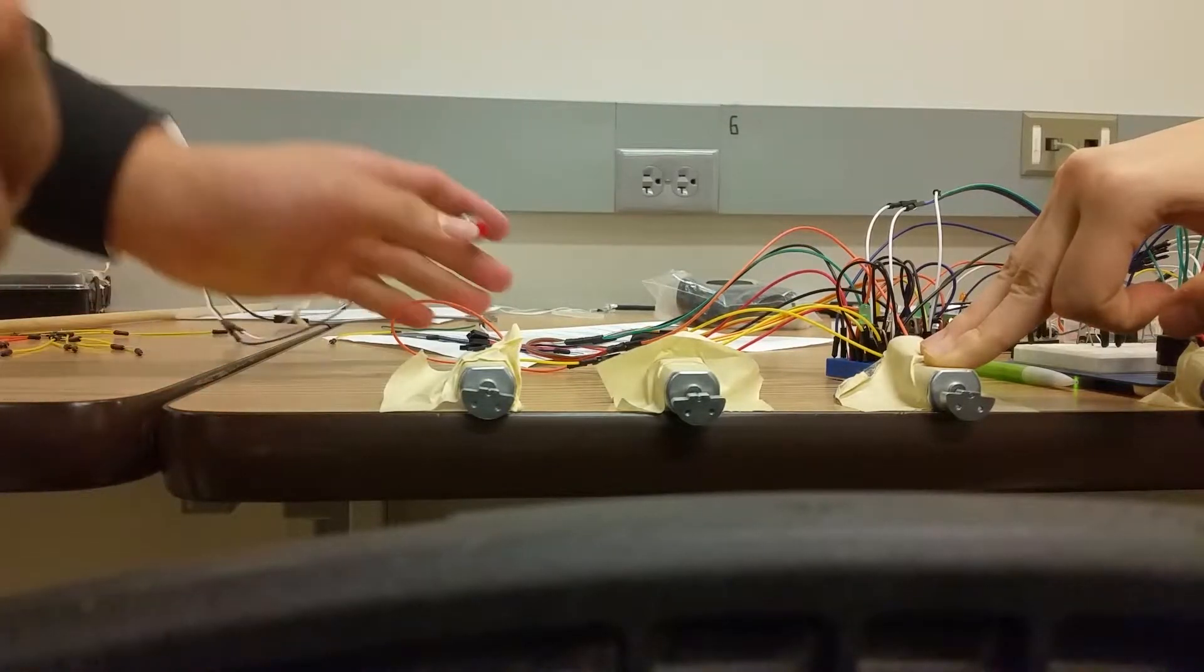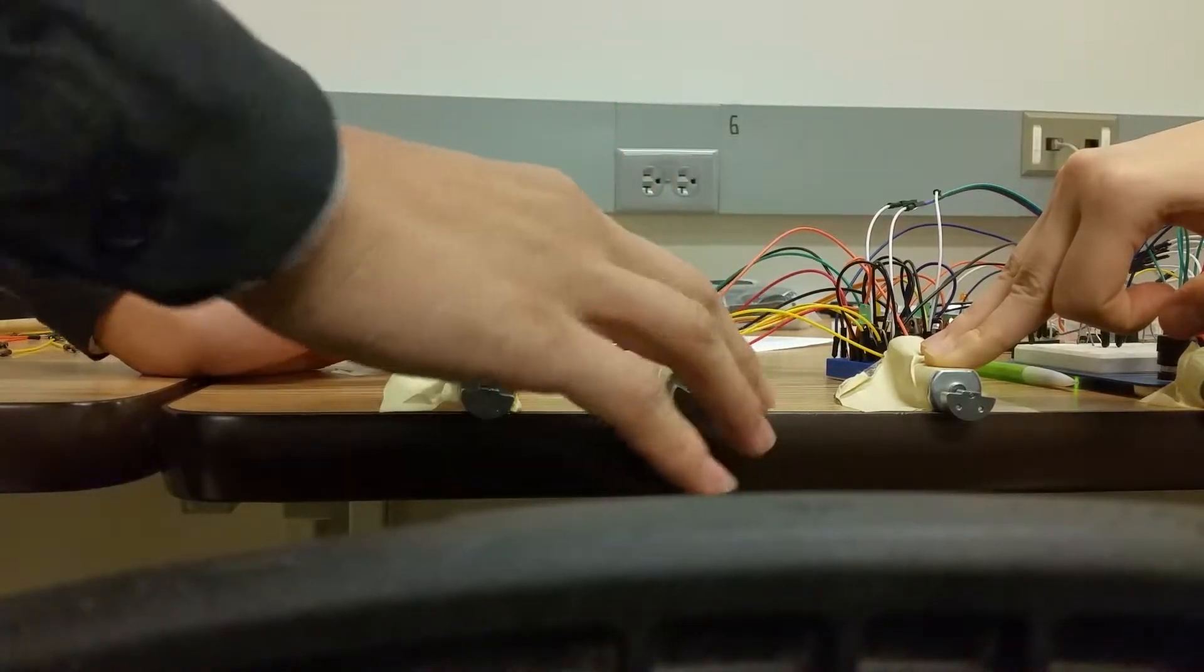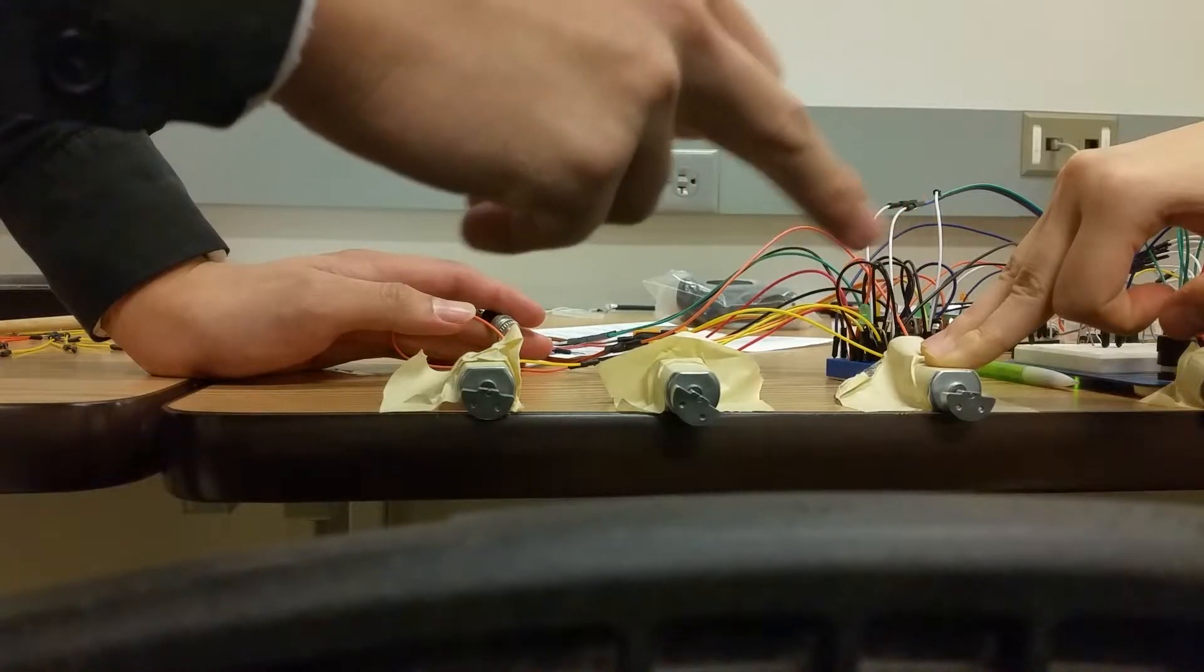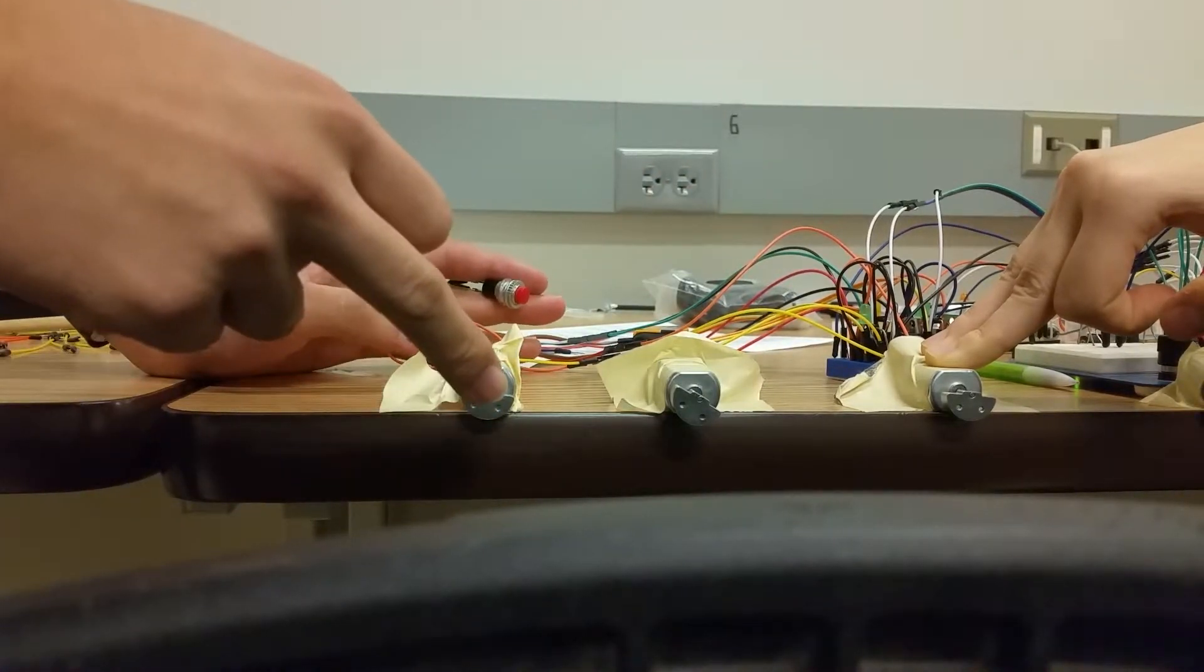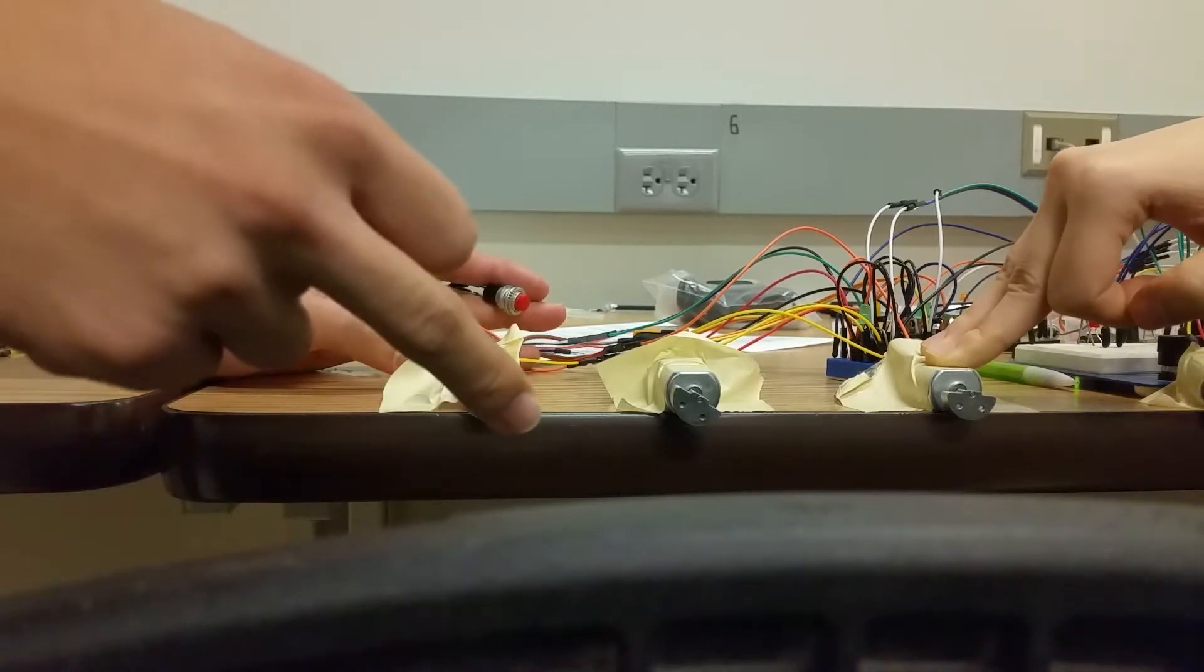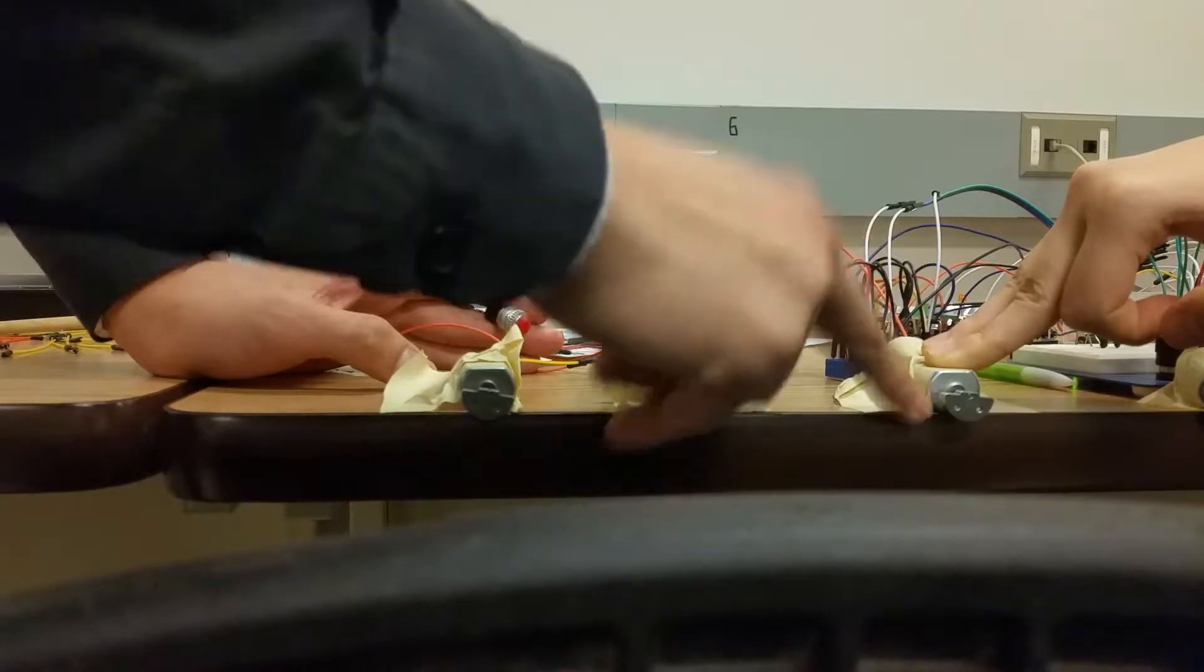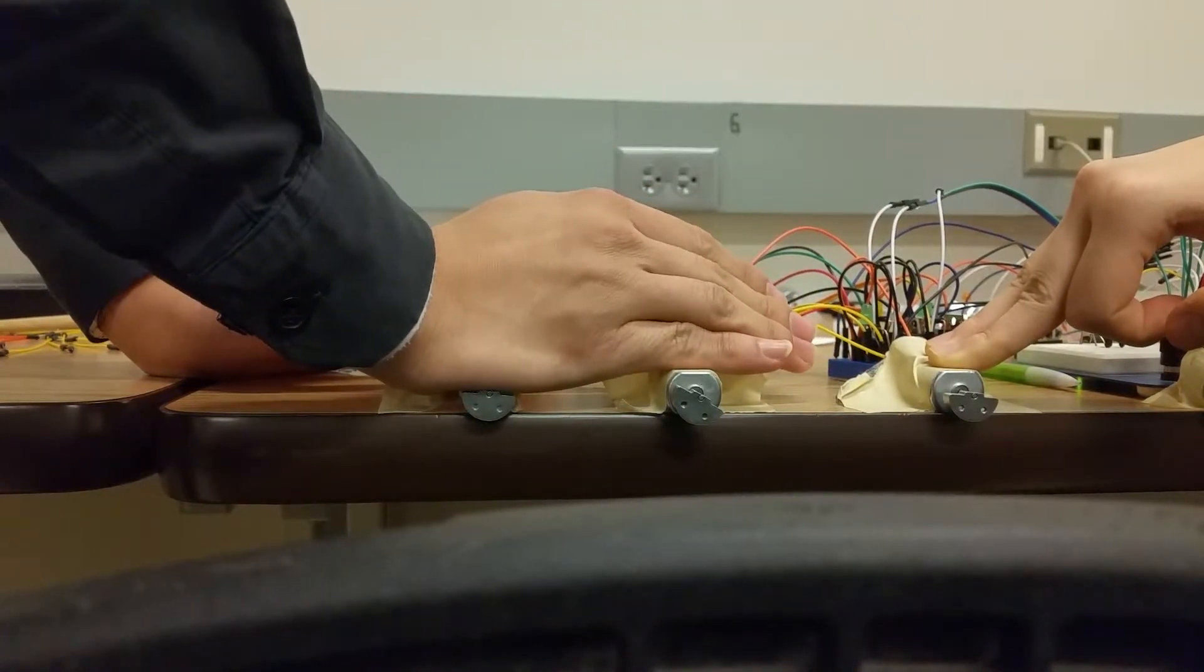All right, so here we have completed the circuit with one push button. There are three motors and each motor will be turned on in a sequence with the push button. There is an off mode, so after this one is enabled, this one is enabled, and this one is enabled, everything will be completely off.